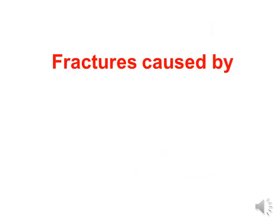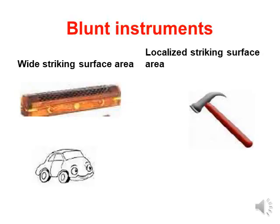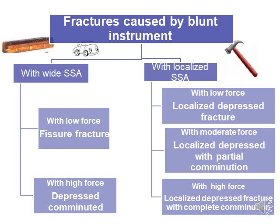Fractures caused by blunt instruments are classified according to striking surface area and force. With a wide striking surface area and low force, the result is a fissure fracture. With a wide striking surface area and high force, the result is a depressed comminuted fracture.